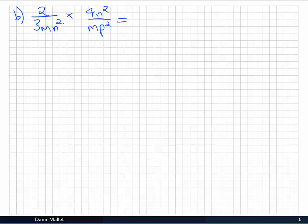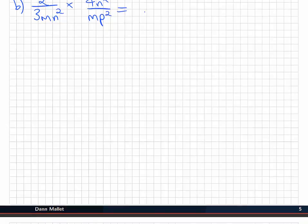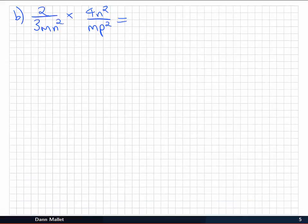Works exactly the same way as before. We multiply across the tops to get two by four is 8n². And multiply across the bottoms to get 3m by m gives m²n²p². So the multiplication is done.